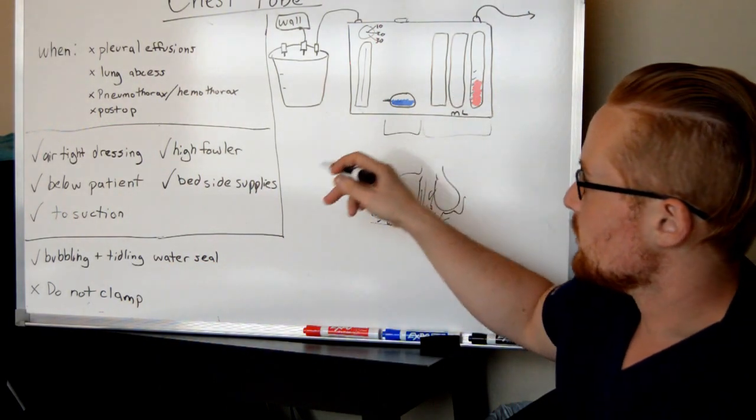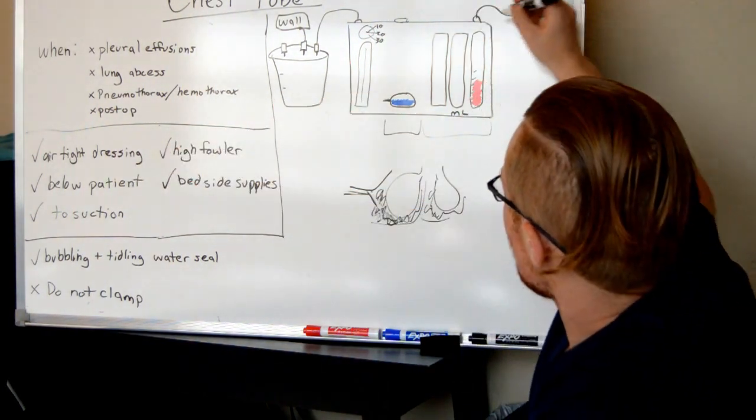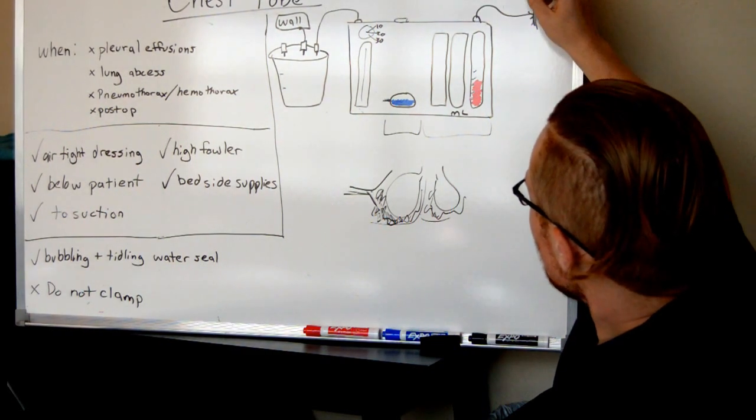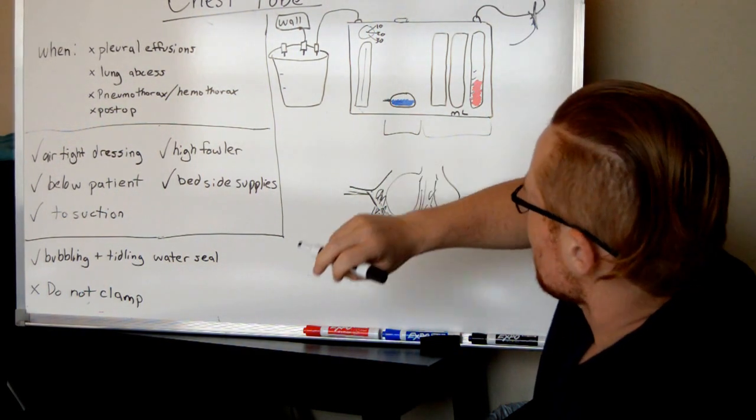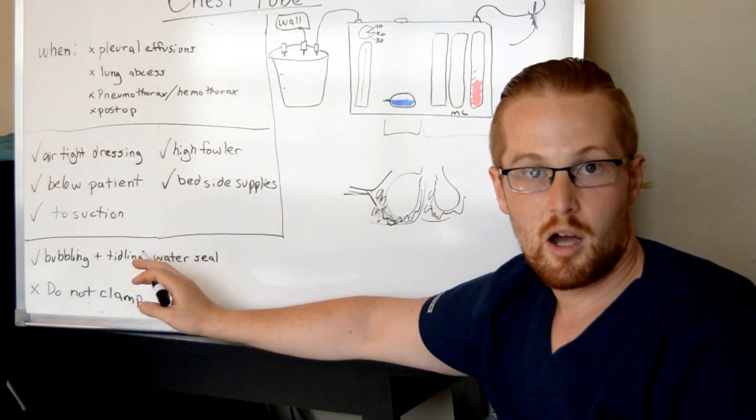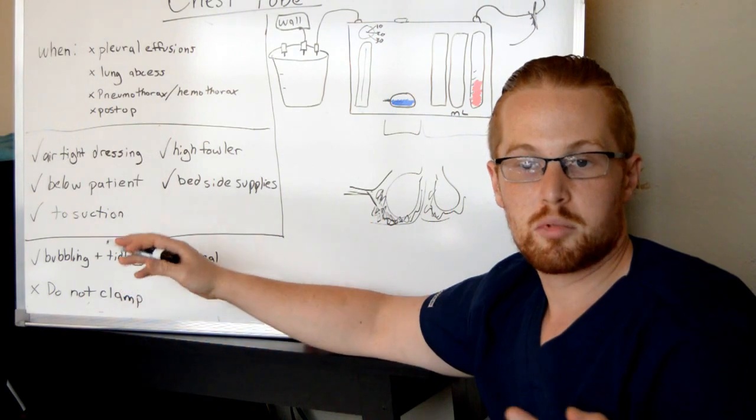Now, how do you maintain this? There's going to be an airtight dressing on the patient where it connects. And this is to keep air from being sucked in around the dressing. You want to keep it below the patient, keep the suction. You don't want to clamp it off, or it can cause complications.